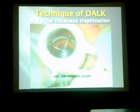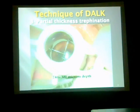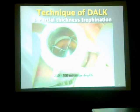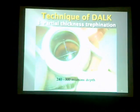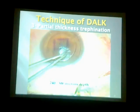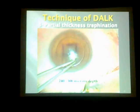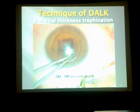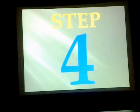Step number three is partial thickness trephination. Our aim is from 240 to 300 microns depth. We have to check the depth of the trephine, and if it is still not deep enough, I can slightly deepen it with a super blade.